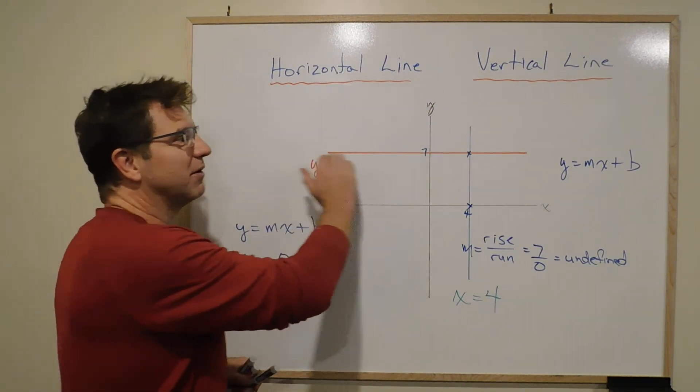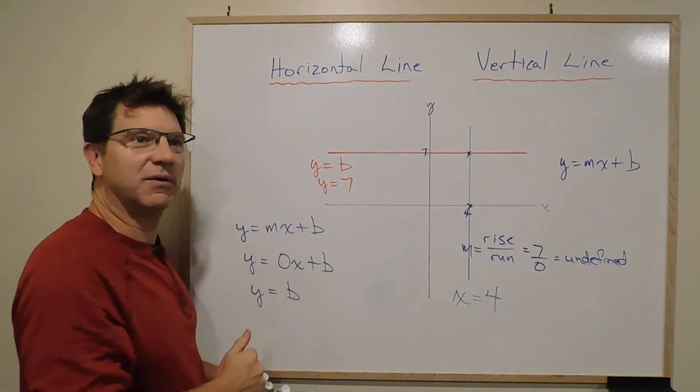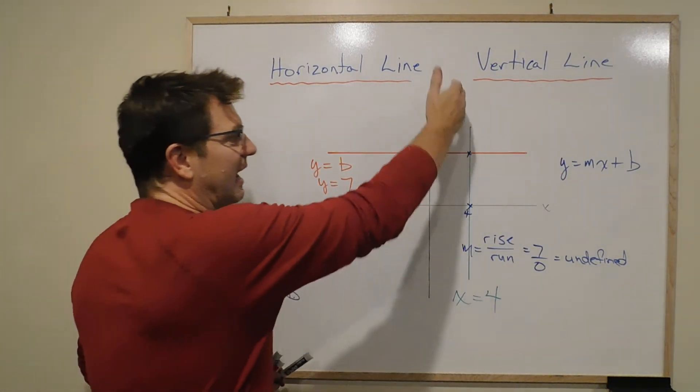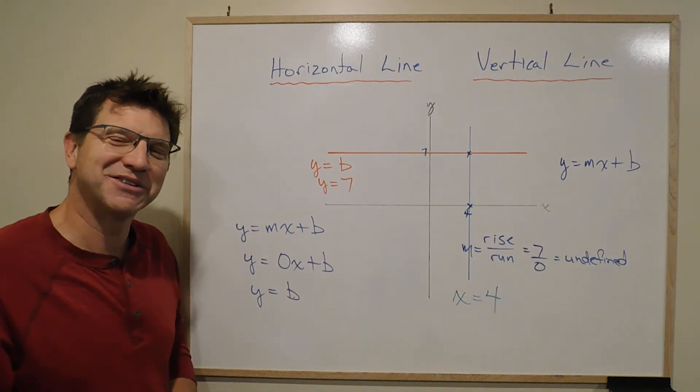So y equals a number for horizontal line equations—very simple equations—and x equals a number for vertical line equations.